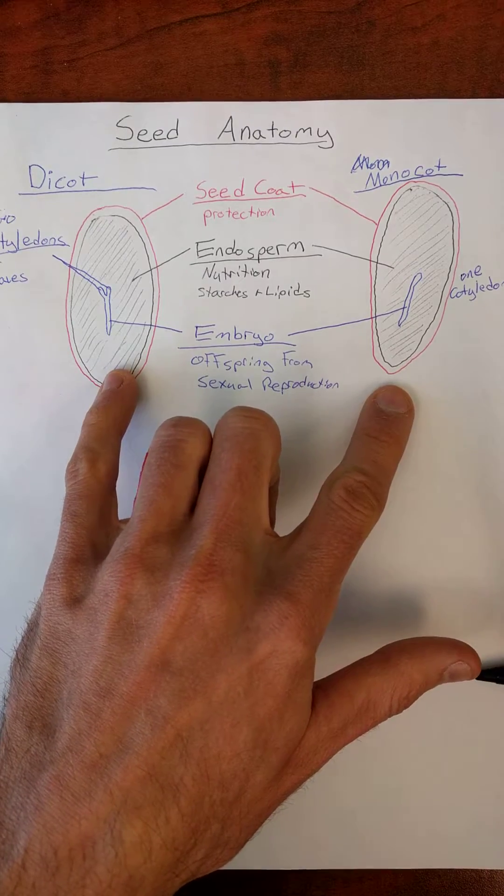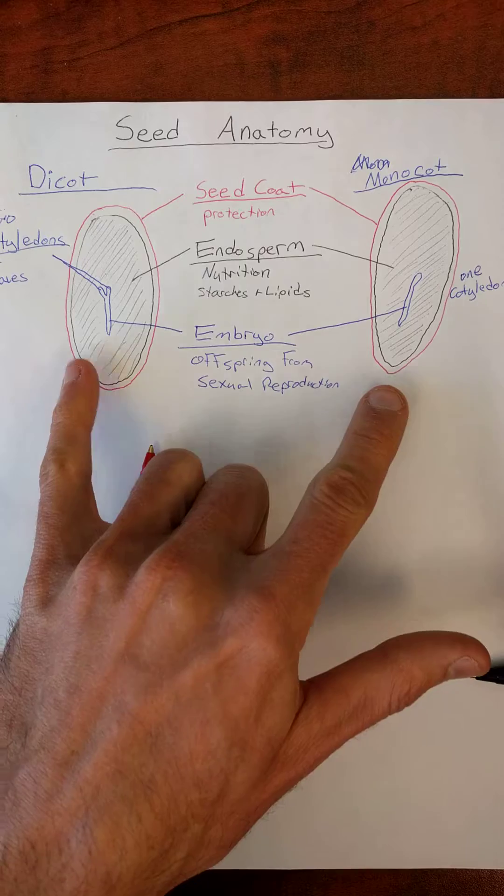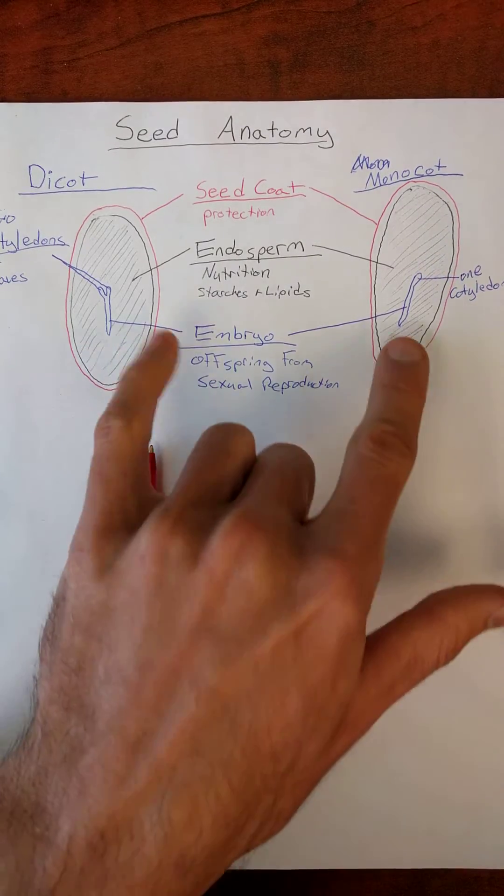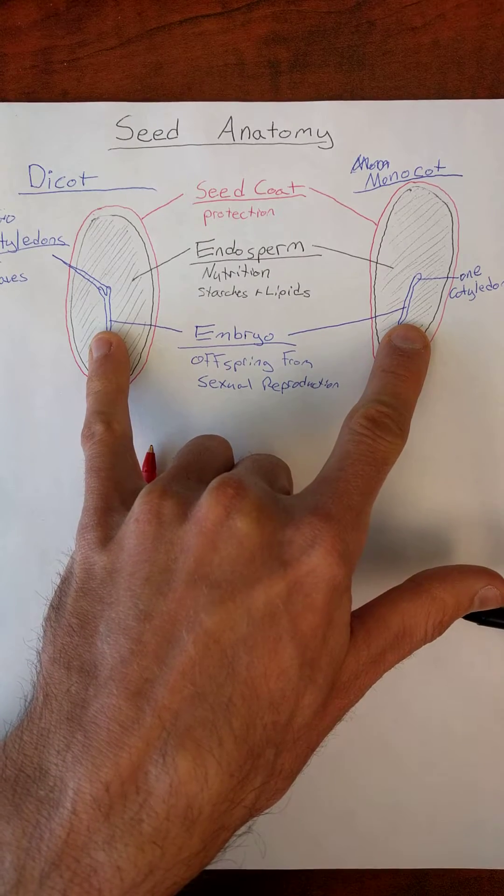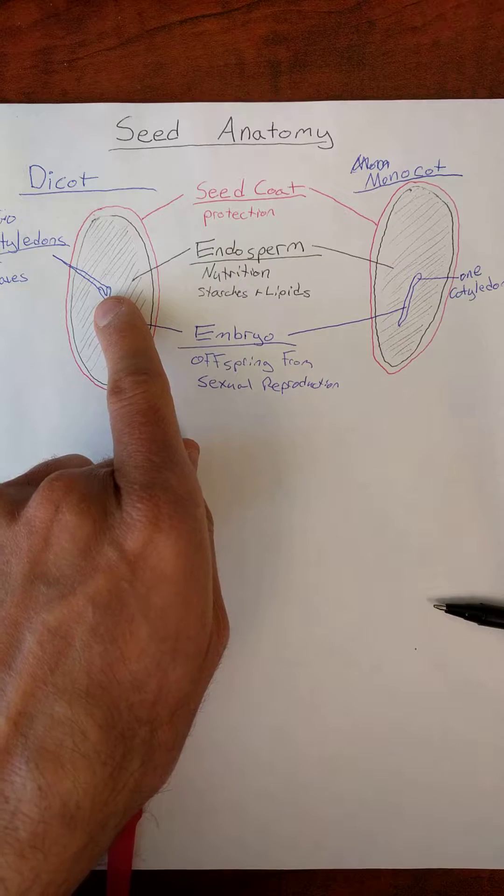Depending on your course, you may learn a lot more differences between dicots and monocots. But this is where it got its original name. The fact that when this embryo emerges, it germinates. It will germinate with one leaf, or it will germinate with two leaves.